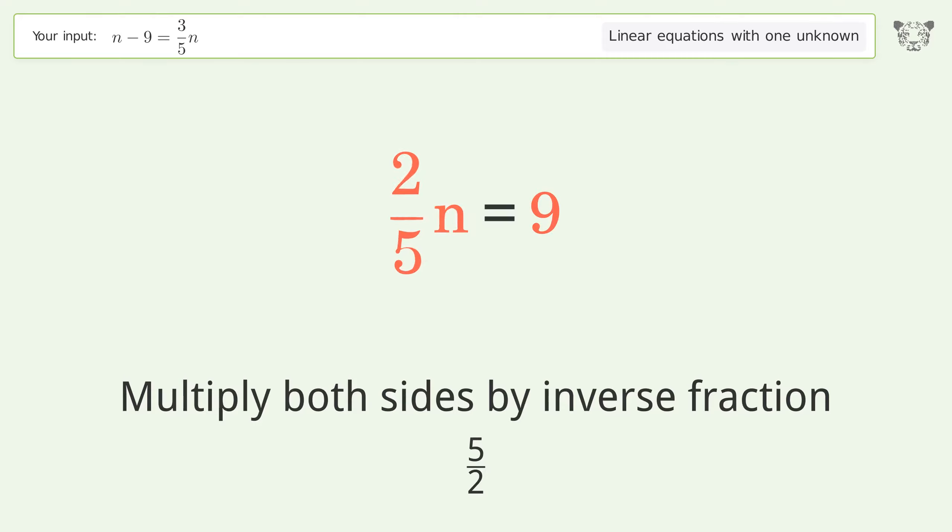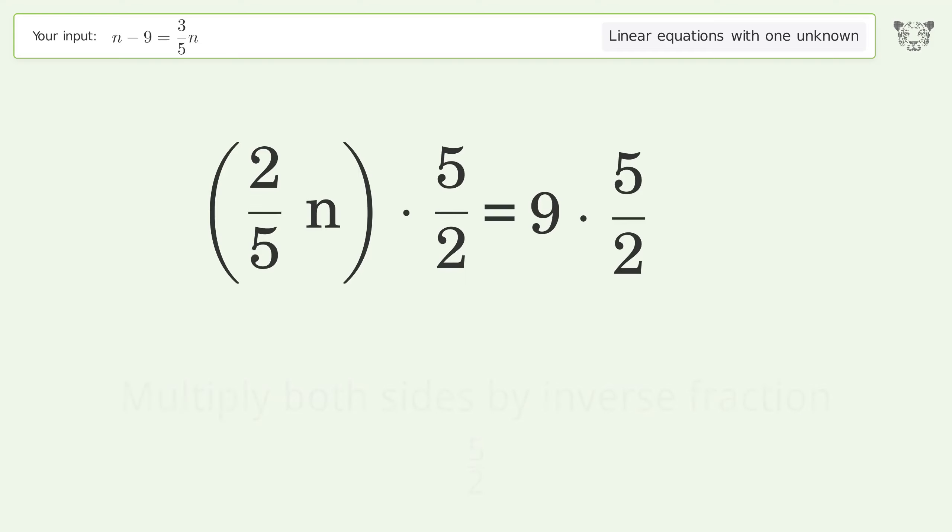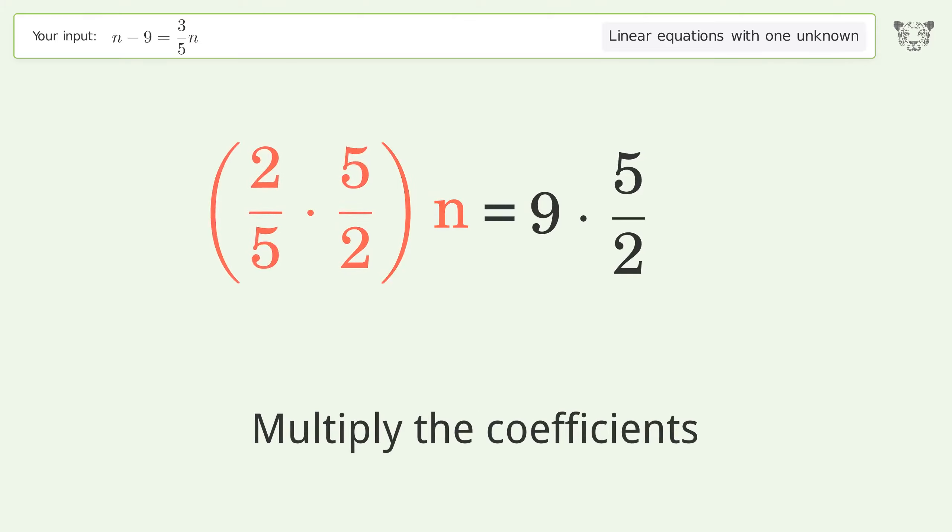Isolate the n. Multiply both sides by the inverse fraction 5 over 2. Group like terms.